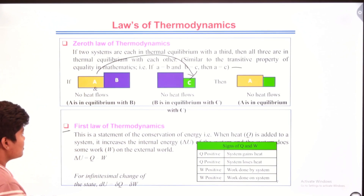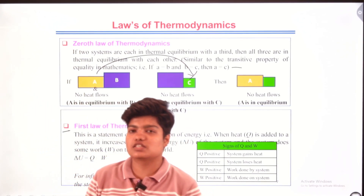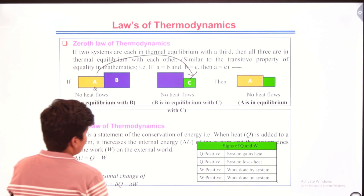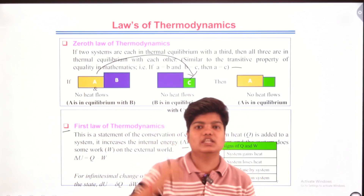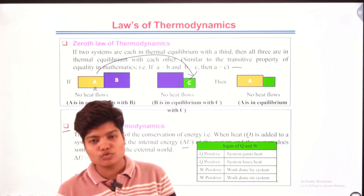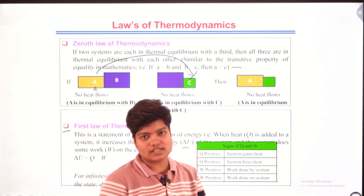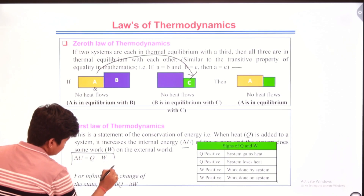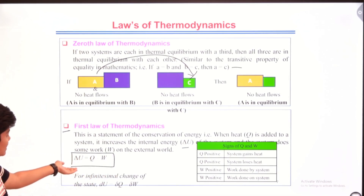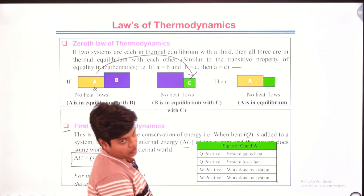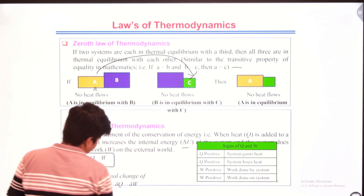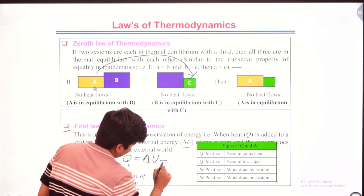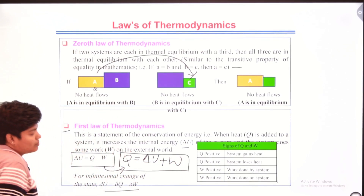The first law of thermodynamics explains conservation of energy. If a system gains some heat, the internal energy of the system will increase, and the system will do some work to compensate the energy. The equation is: ΔU = Q − W, where U is internal energy, Q is heat gained, and W is work done. For an infinitesimal change: dU = δQ − δW. Equivalently, Q = ΔU + W.